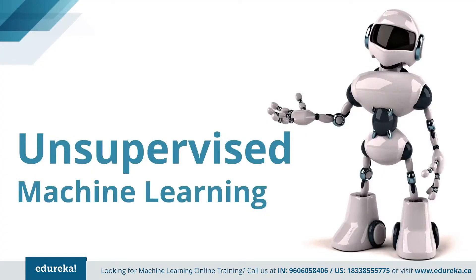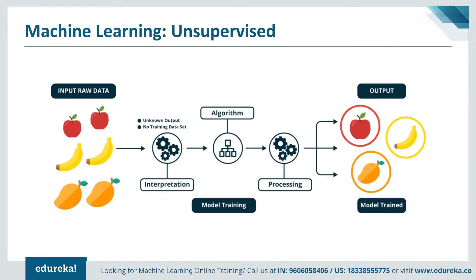Now let's learn about the next category: unsupervised learning. Mathematically, unsupervised learning is where you only have input data X and no corresponding output variable. The goal is to model the underlying structure or distribution in the data in order to learn more about it. In unsupervised learning, instances of a training dataset do not have an expected output associated with them. Instead, unsupervised learning algorithms detect patterns based on the inherent characteristics of the input data. An example of a task that applies unsupervised learning is clustering, where similar data instances are grouped together.